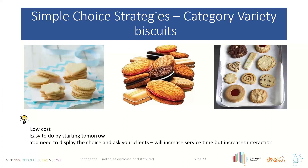Using creative biscuit variety is one of the easiest strategies, since aged care uses biscuits by the tonne. Instead of just handing out a biscuit, ask residents what kind they'd like. Display an assorted tray and let them choose. You can even use shape cutters to make the same recipe into different shapes. Low cost, easy to implement — you can start tomorrow.